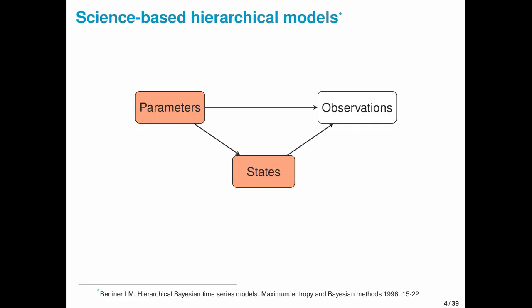In statistical ecology we usually use science-based hierarchical models for inference. In these models, some component describes how the data arise, some component relates to states that might be time or space evolving, and some component relates to the parameters that we don't know.